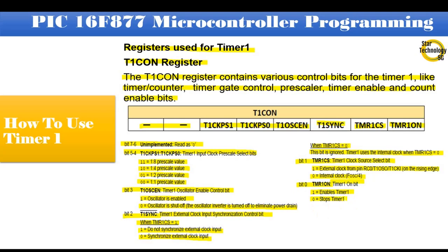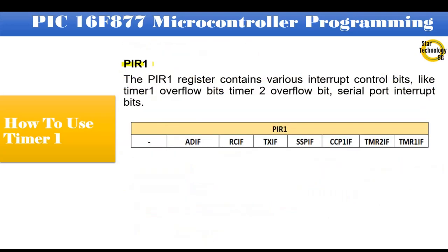PIR1. The PIR1 register contains various interrupt control bits, like Timer 1 overflow bit, Timer 2 overflow bit, serial port interrupt bits, ADIF, RCIF, TXIF, SSPIF, CCP1IF, TMR2IF, TMR1IF.